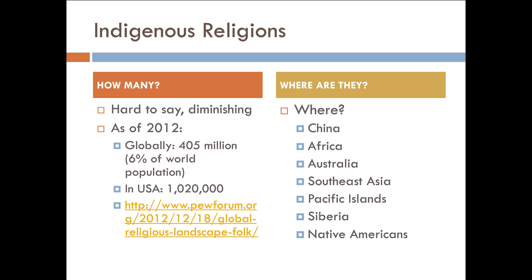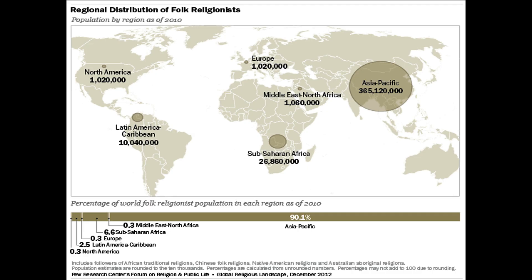Where are they located? They're basically located everywhere — in China, in Africa, Australia, Southeast Asia, the Pacific Islands, Siberia, and in North America as well with Native Americans. Here is a map that shows a regional distribution of folk religionists, and the vast majority of them live in the Asia Pacific region, which has to do with folk religion in China and Japan, etc. However, they are found on every continent on Earth.